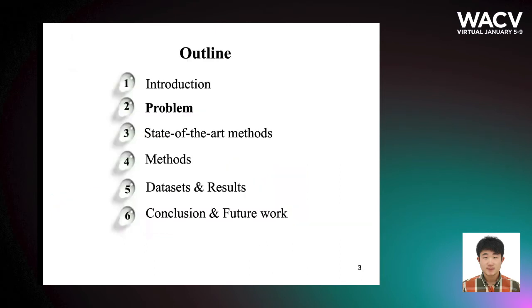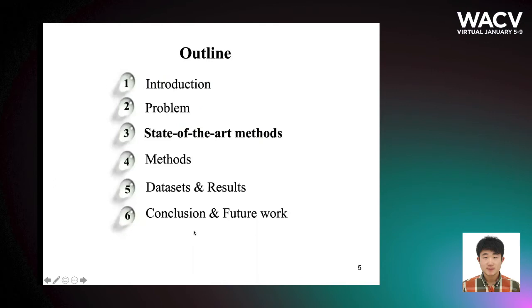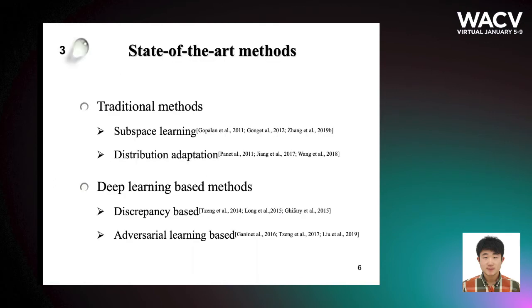Next, I'm going to formulate the problem of unsupervised domain adaptation. We usually have labeled source domain and unlabeled target domain, and our objective is to train a classification model on the source domain and improve the accuracy on the target domain. Of course, there are many state-of-the-art methods from both traditional and deep learning approaches, but due to limited time, I won't discuss the details. If you are interested, you can check the references.